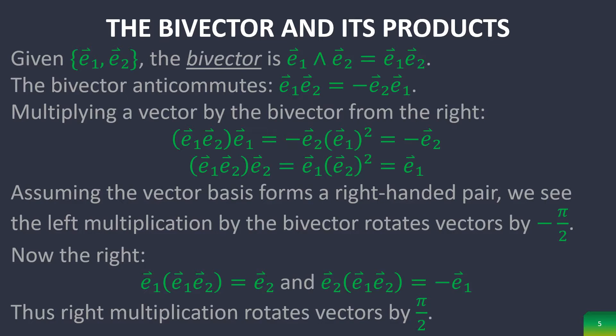The bivector is equal to the following. It simplifies just to the geometric product of the two orthonormal vectors because their scalar product is equal to zero.